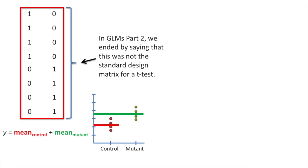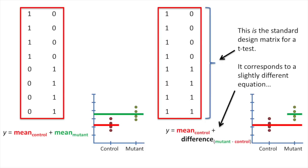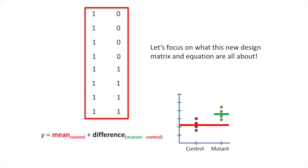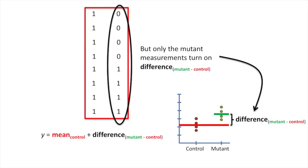In part two of this series, we ended by saying that this was not the standard design matrix for a t-test — it was kind of a cliffhanger. And then I showed you that this is the standard design matrix for a t-test. It corresponds to a slightly different equation. In this version, all measurements — both control and mutant — turn on the term for the mean control value. But only the mutant measurements turn on the term for the difference between the mean of the mutant data and the mean of the control data. This term serves as an offset that we can use for the mutant data.